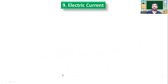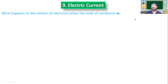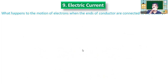Now we will try to understand what happens to the motion of electrons when the ends of the conductor are connected to the battery. When it was free, electrons moved randomly. We will discuss that tomorrow — time is up and we need to go to school.